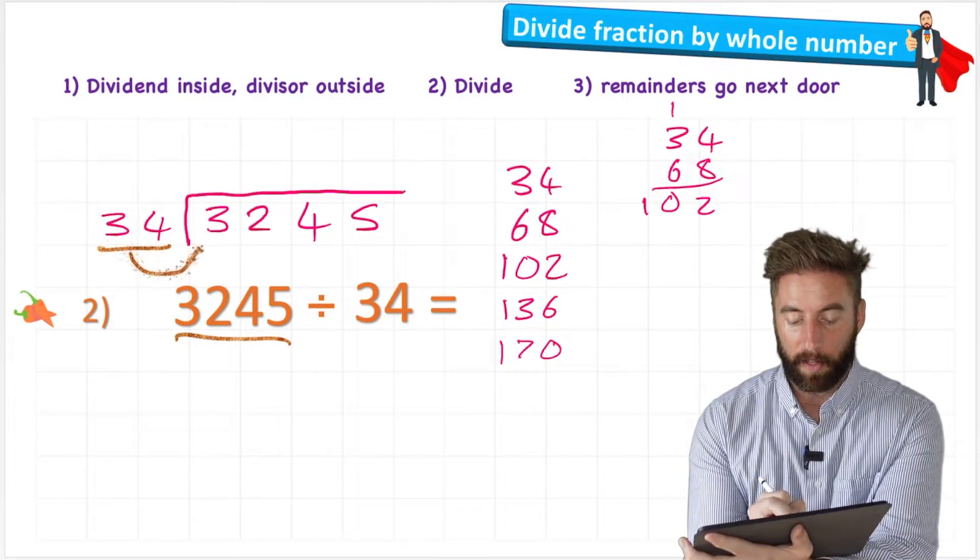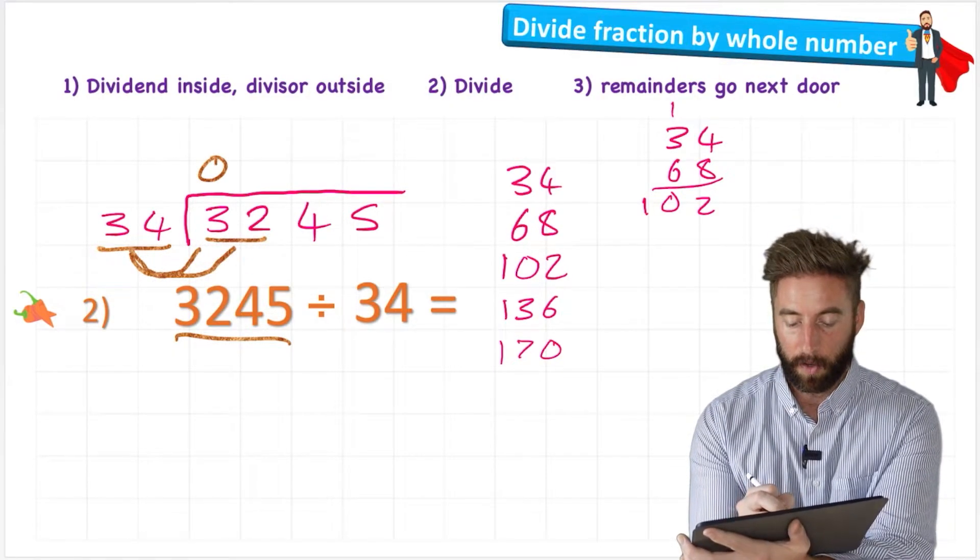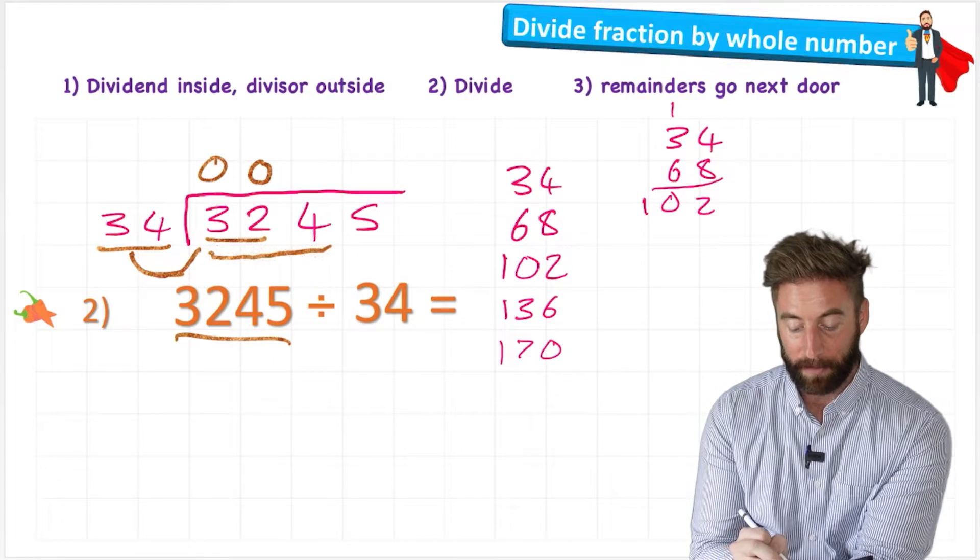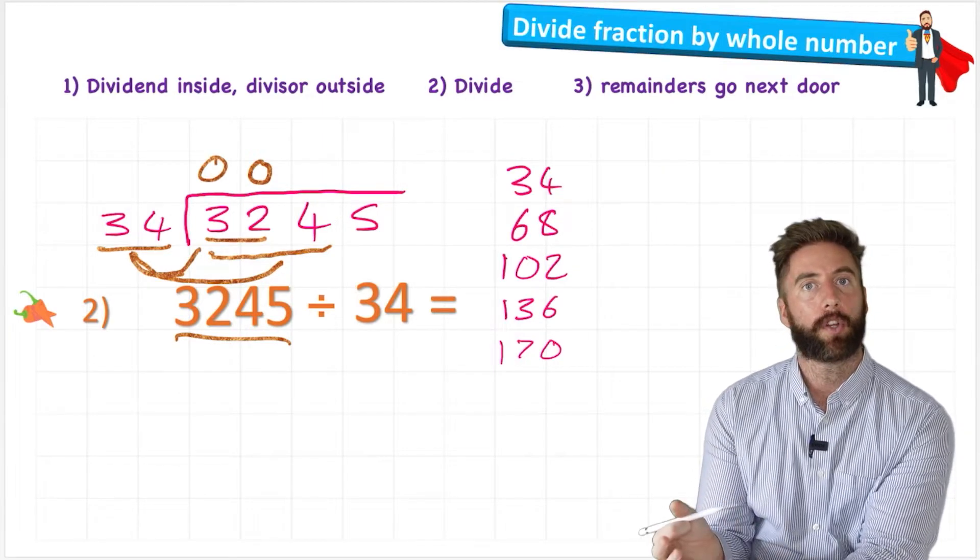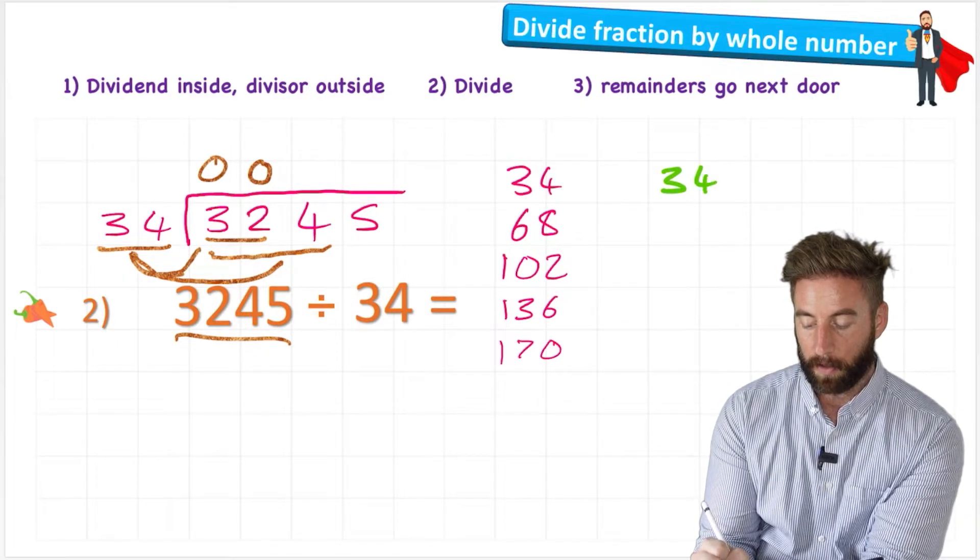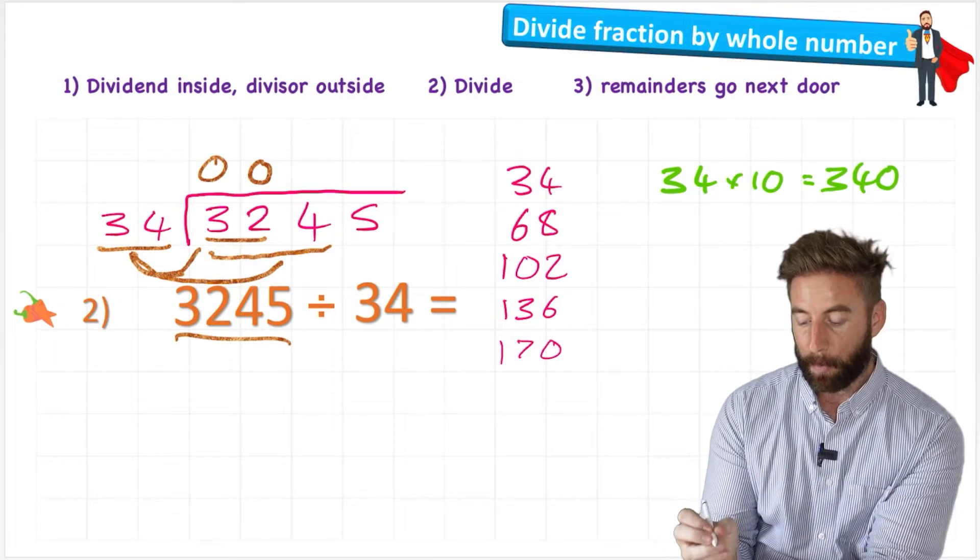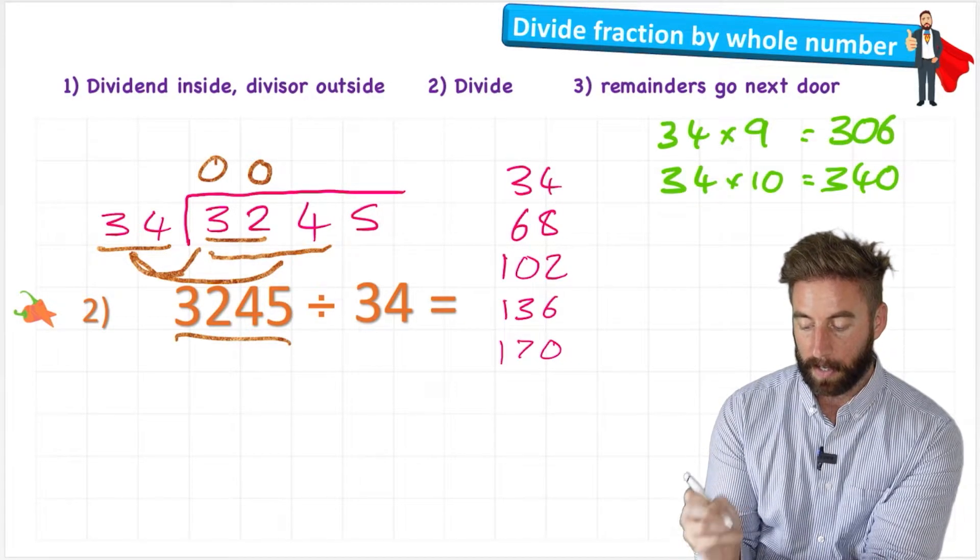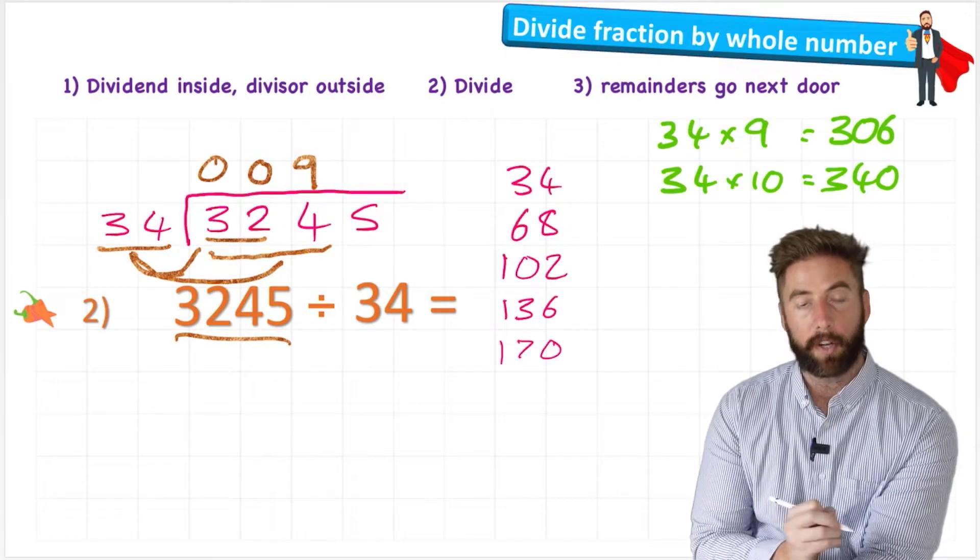How many 34s are there in 3? 0. So I can just look at 32. How many 34s are there in 32? Also 0. So now I'm going to have to roll that whole 32 into the 4 as well and make it 324. And look at how many 34s are there in 324. Well, I didn't do enough multiplications for that. So I'm going to use some number knowledge. And I'm going to look at 34. And I'm going to multiply it by 10. 34 times 10 equals 340. And now I'm just going to go backwards down my multiplication table and do 34 times 9 would therefore equal 306. Because I've just taken away 34 from the 340.